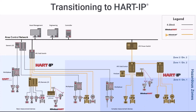As confidence with Ethernet APL and HART IP grows, a facility can start extending their network to additional instrumentation and into even more hazardous areas. This final diagram extends the network and adds in two new product types. The first is an Ethernet APL power switch, which can provide power to multiple field switches installed in the hazardous area.